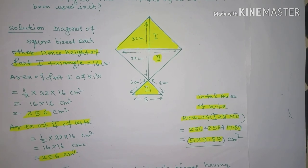Sabse pehle solution dekh lete hain. Diagonal jo hai square ke, woh ek dusre ko bisect karte hain, 90 degree pe bisect karte hain, thik hai.